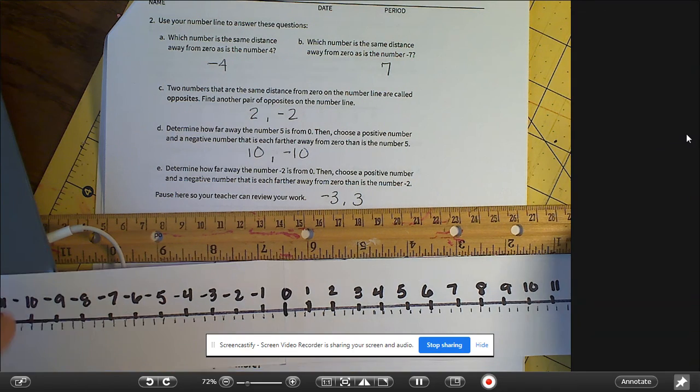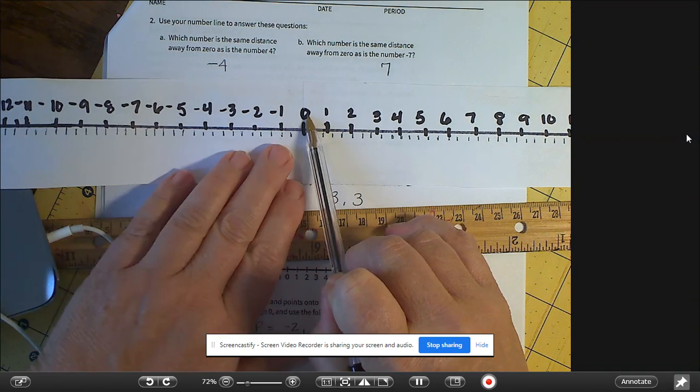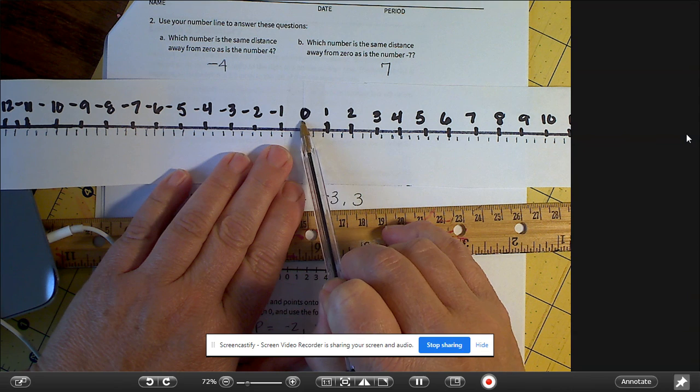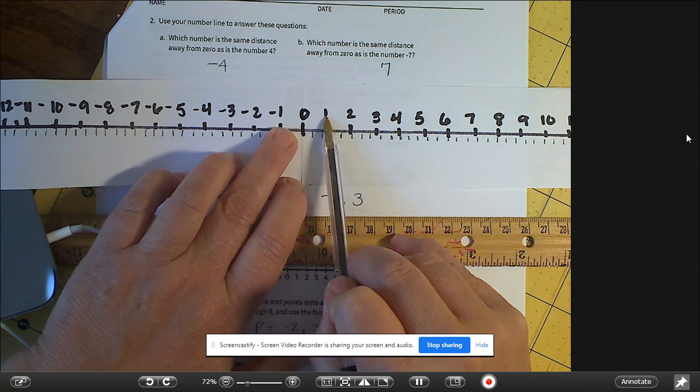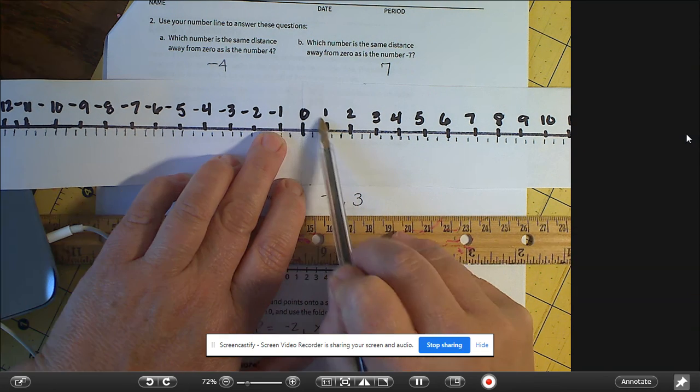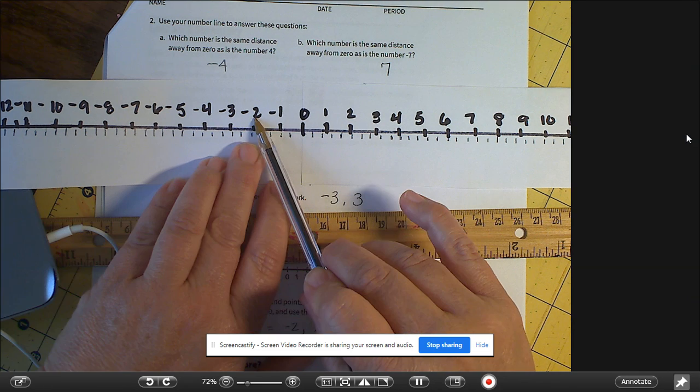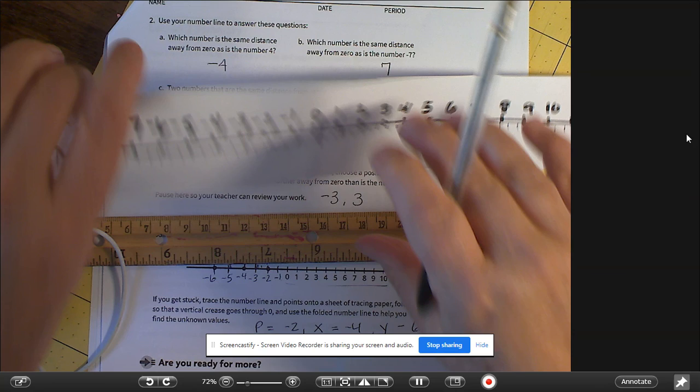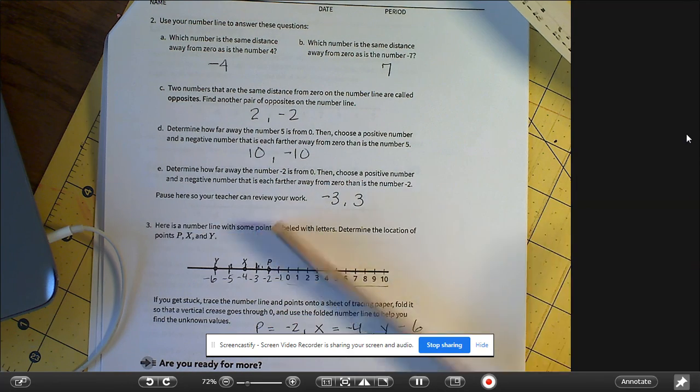So when they're saying that on the number line, just to reiterate: 1 is one space away from zero. Negative 1 is one space away from zero. So 1 and negative 1 are opposites. 2 and negative 2 are opposites. All right. Let's go on.